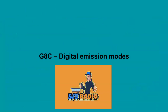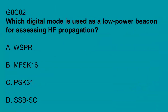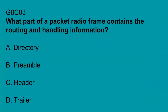G8C covers digital emission modes. G8C01: What band do amateurs share channels with unlicensed Wi-Fi service? The 2.4 GHz band. G8C02: What digital mode is used as a low power beacon for assessing HF propagation? WSPR. G8C03: What part of a packet radio frame contains the routing and handling information? The header.